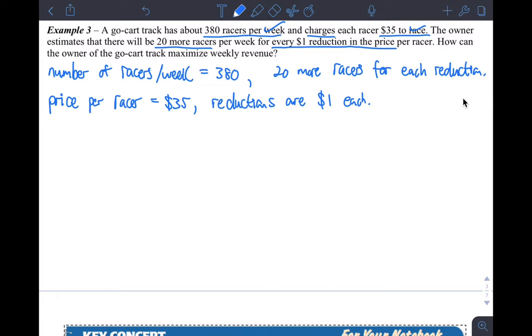So we know a whole bunch of stuff. Actually, the only thing we don't know is how many reductions need to take place. And obviously this says, how can the owner of the go-kart maximize revenue? So how many reductions need to take place to make revenue the most, the maximum? So let X be the number of price reductions.